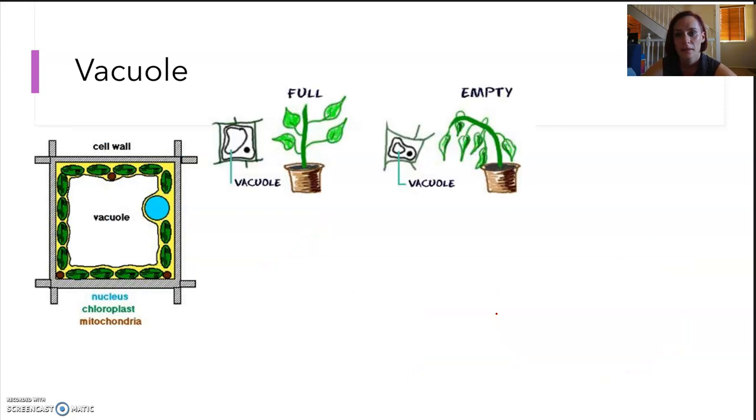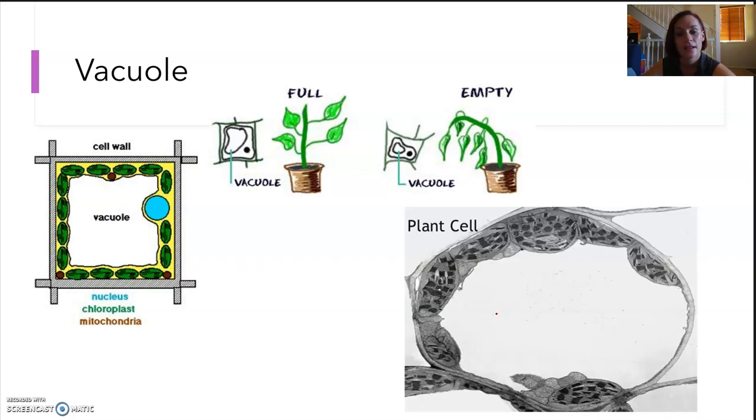Vacuoles are closed compartments. They are filled with water. They are very large and quite prominent in plant and fungi. They do appear in some animal and bacteria cells and things like that. They can isolate toxins, they can store waste, they can store sugars and energy, they can help maintain pressure, shape of the cell as well, and they can just generally maintain the internal environment.